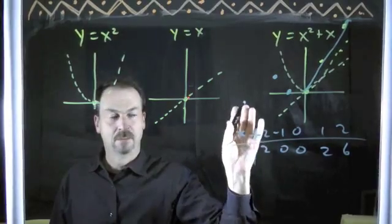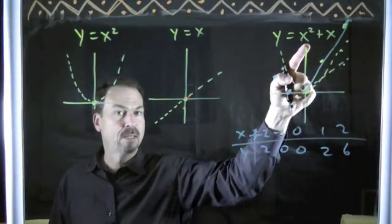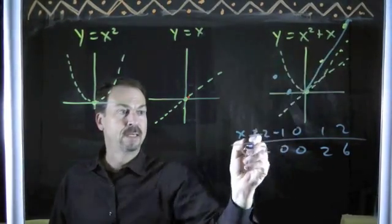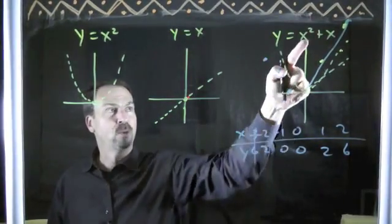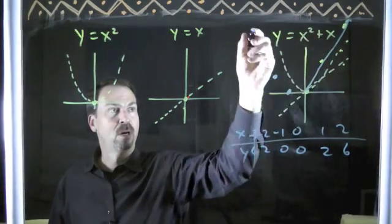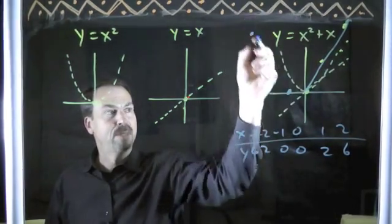Let's put in negative 3. Terrible board technique. Negative 3 squared is 9. Plus negative 3 is 6. It's looking curious. Negative 4 squared is 16. Plus negative 4 is 12.